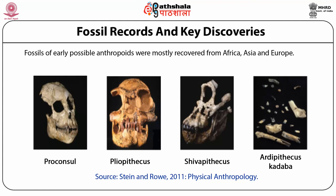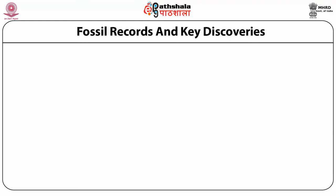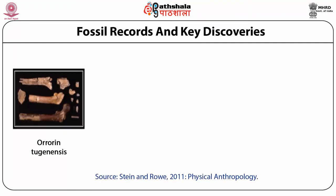Late Miocene and early Pliocene fossils include Ardipithecus, Orrorin, and Sahelanthropus. The Ardipithecus representative fossils were recovered from Ethiopia in 1993. The structure of teeth, particularly canine and premolar, show a dental complex intermediate between apes and humans. Orrorin fossils were discovered from Tugen Hills of western Kenya in the year 2000. Evidence of certain stresses on the surface of the femur of the fossil is indicative of bipedalism.